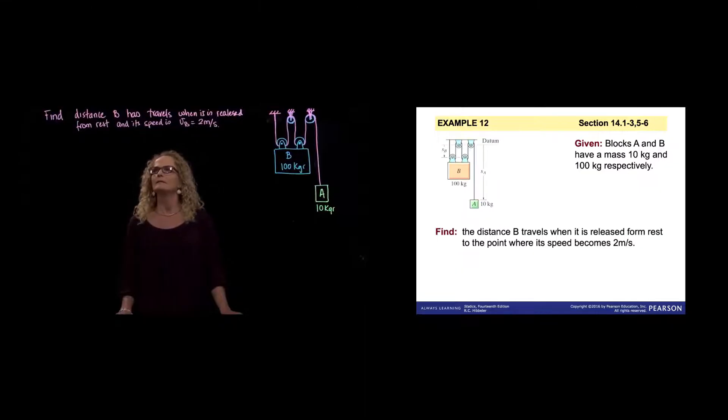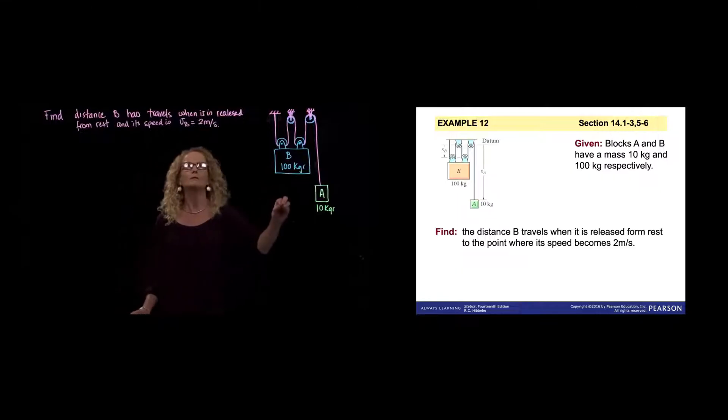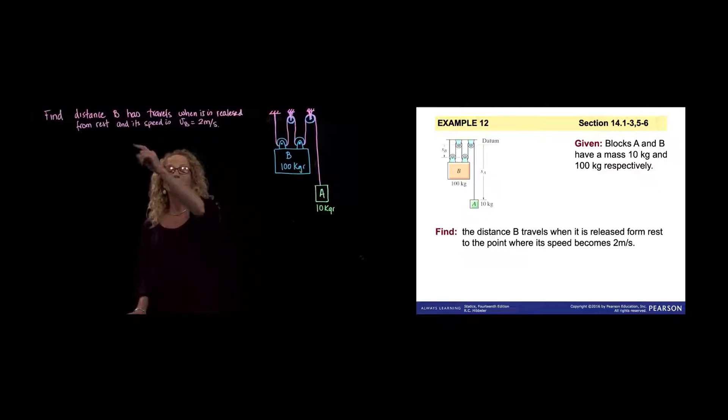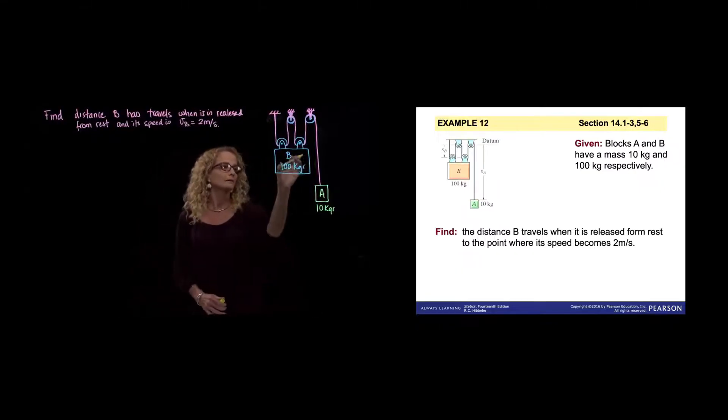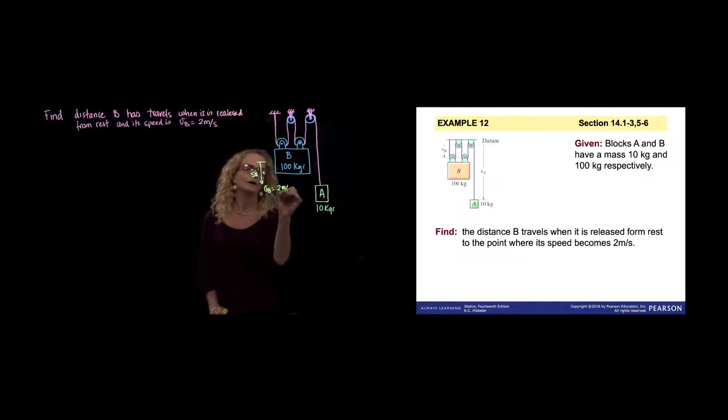We are being asked the distance B has traveled when it's released from rest. Why do we use the principle of work and energy? Because we are relating here speed, the speed of B and the speed of A, the distance traveled. As we can imagine this is much heavier than that, so that goes down a distance. They want us to find that displacement when it reaches a velocity of 2 meters per second.